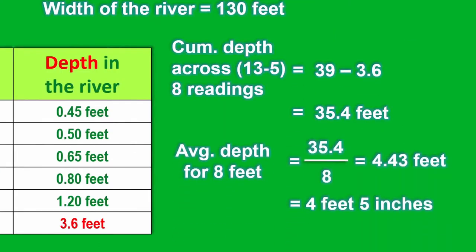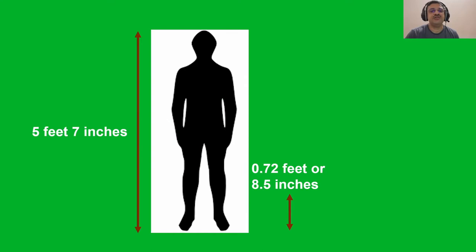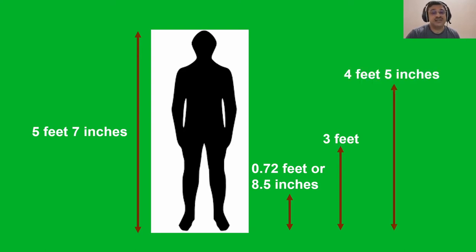Now this is remarkably interesting. For a man of average height of 5 feet 7 inches, 3 feet is just about thigh deep water and 4 feet 5 inches is about chest deep water. This is way deeper than what we had expected and should immediately ring the alarm bells of caution.